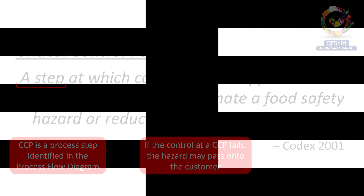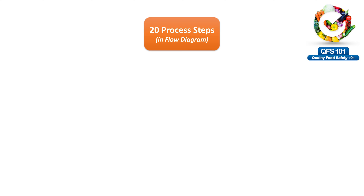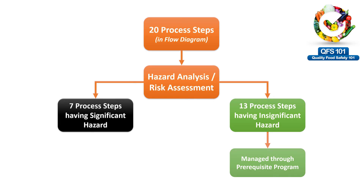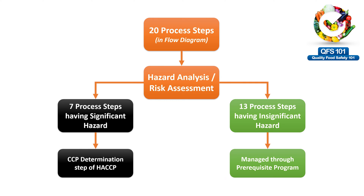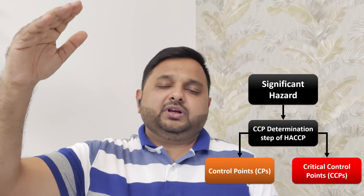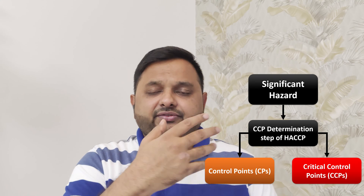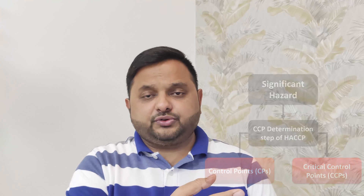To do a quick recap: we identify a series of process steps in the process flow diagram. In the hazard analysis step, we filter them into significant and insignificant hazards. Insignificant hazards are controlled by prerequisite programs. Significant hazards proceed to CCP identification - some will become CCPs, and the remaining may become control points (CPs) with a different type of control established for them.